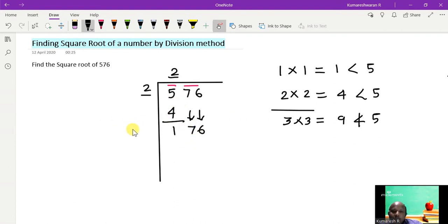Then the next step is to double the 2. So doubling the 2, that is 2 into 2, is equal to 4. I put it here with a blank. I place a blank, and I also place a blank.